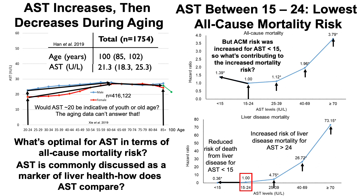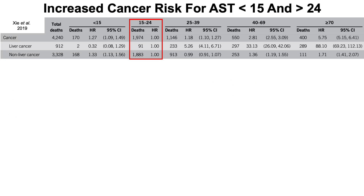If you remember the all-cause mortality data, there was an increased all-cause mortality for AST less than 15, yet there's a decreased risk for liver disease mortality at that level. So what's contributing to the additional increase in all-cause mortality? For people who had AST less than 15 in this study, there was an overall increase in cancer — more specifically in non-liver cancer. People with AST less than 15 rarely had liver cancer, with only two deaths out of 912 total deaths, whereas non-liver cancer showed a significant 33% increased risk, resulting in an overall 27% increased cancer risk.